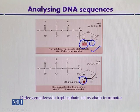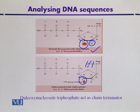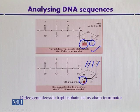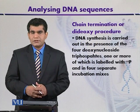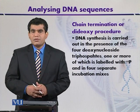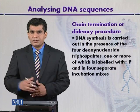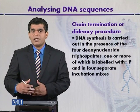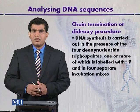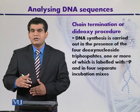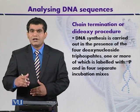We can use different dideoxynucleoside triphosphates — for adenine, guanine, cytosine, or thymine — adding modified nucleotide bases so that chain termination occurs at different time intervals. In the dideoxy procedure, DNA synthesis is carried out in four different reaction mixtures, each containing a respective modified nucleotide base: ddNTP for guanine, adenine, thymine, or cytosine.